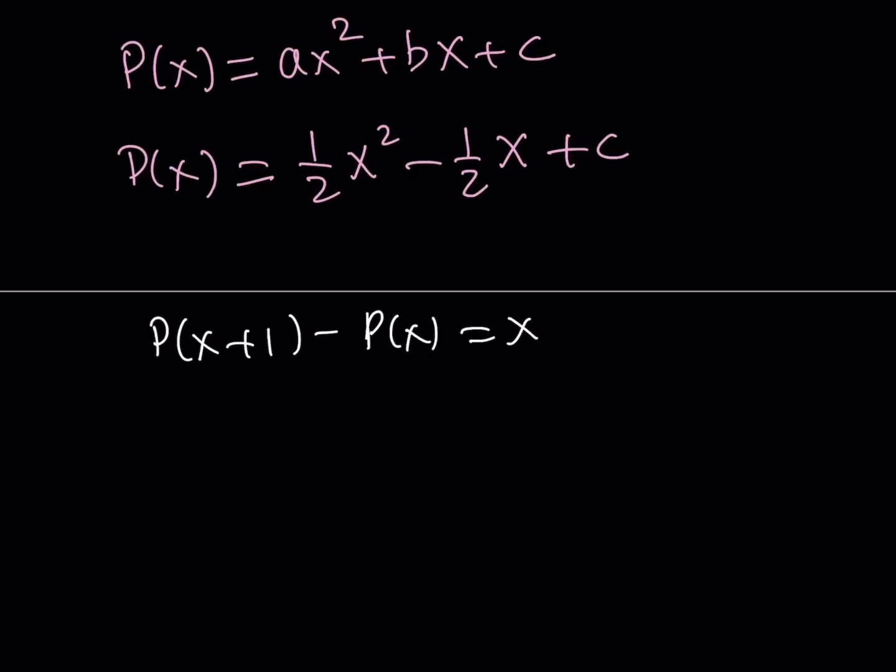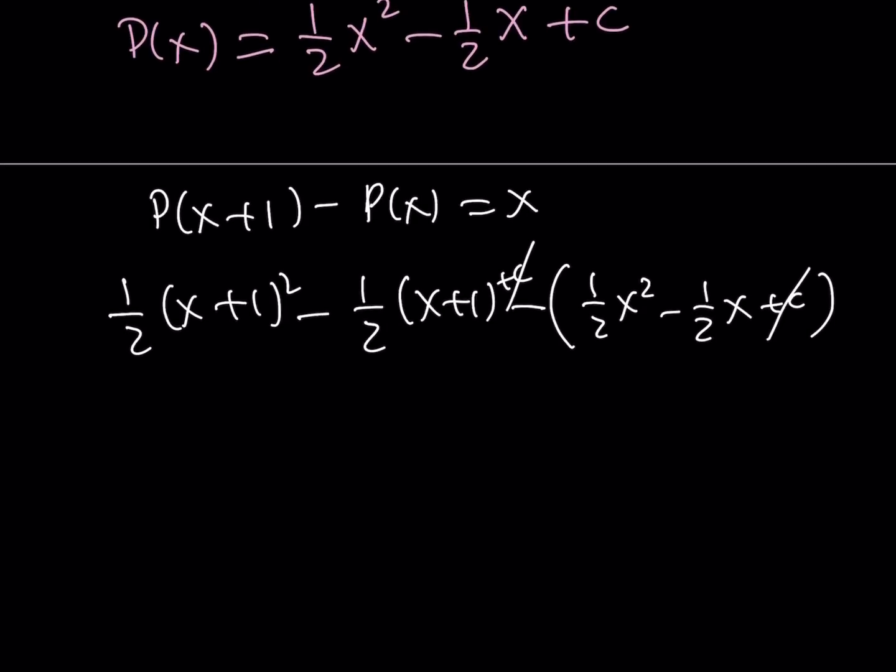And you're going to notice that pretty much everything cancels out. So 1 half X plus 1 squared minus 1 half X plus 1 minus 1 half X squared minus 1 half X. Oh, by the way, I forgot to put the C here, but they're going to cancel out anyways. So the C cancels out. That means that C pretty much can be anything here.